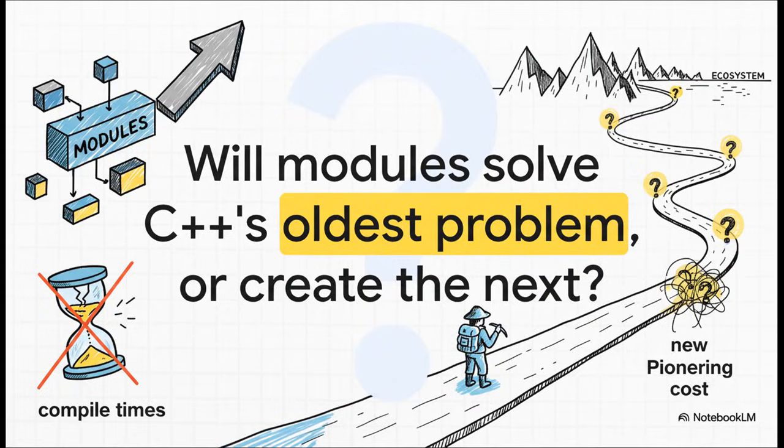And all of this leads us to the final big question. Will modules finally solve C++'s oldest, most expensive problem? Or are they just creating the next one? There's no doubt that modules are the future. They are a powerful, elegant solution to a problem that has plagued this language since the very beginning. But the road to get there is proving to be long and it's filled with all new kinds of complexity. The old tax of waiting for the compiler might be going away, but it seems like it's being replaced by a new one, the cost of pioneering a massive and still evolving new ecosystem.